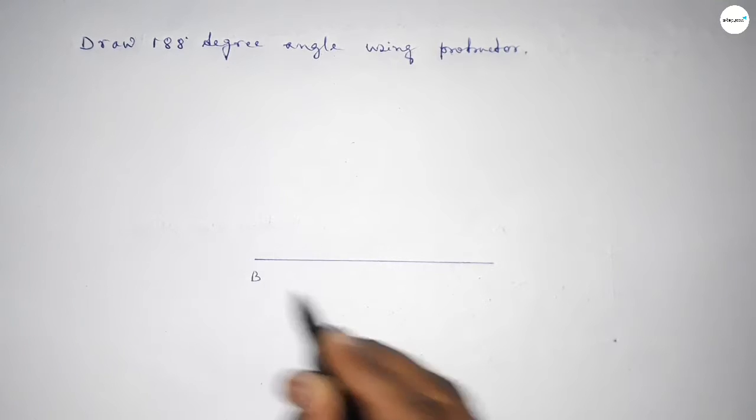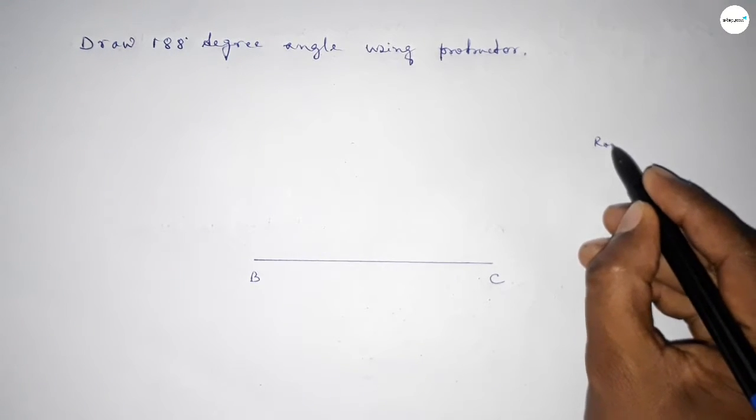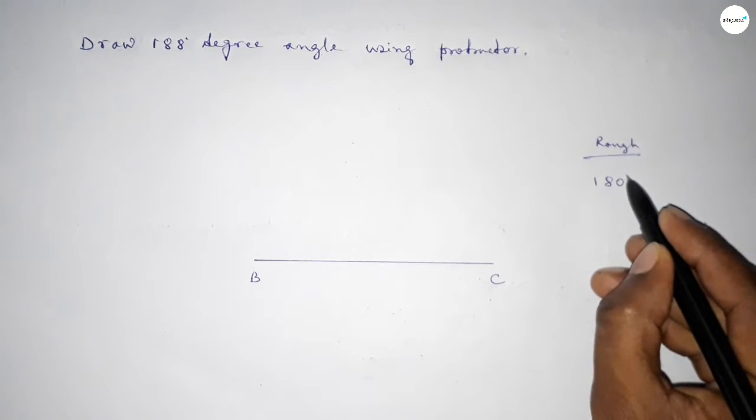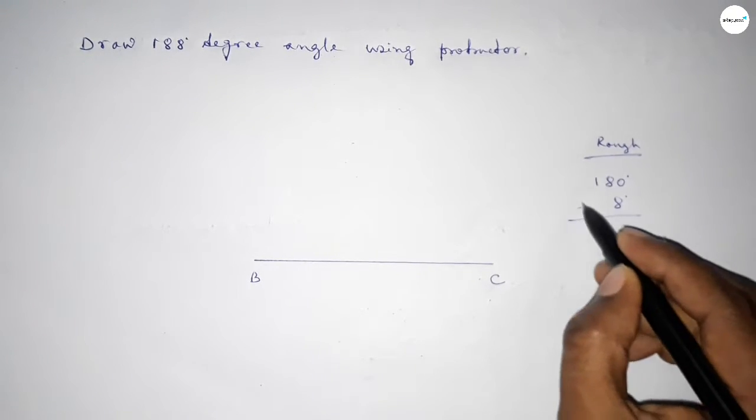Next, taking here B point and here C point. Now roughly discussing here some calculation. So if we add 8 degree angle with 180 degree, then we can get 188 degree.